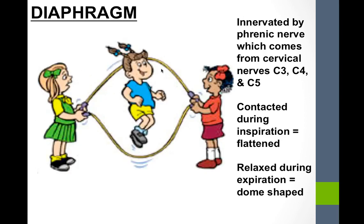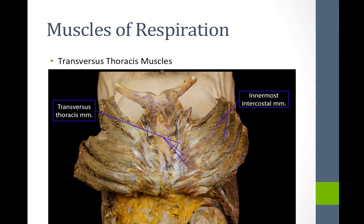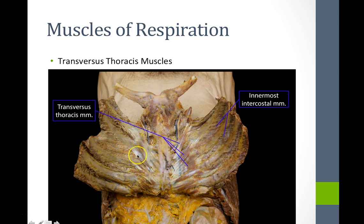The mnemonic for diaphragm innervation is: 'C3, 4, and 5 keep the diaphragm alive,' referring to the phrenic nerve. Another muscle of respiration is the transversus thoracis muscle, visible on the internal surface of the rib cage. With the sternum anteriorly and ribs extending laterally, the transversus thoracis fibers extend outward from the sternum.